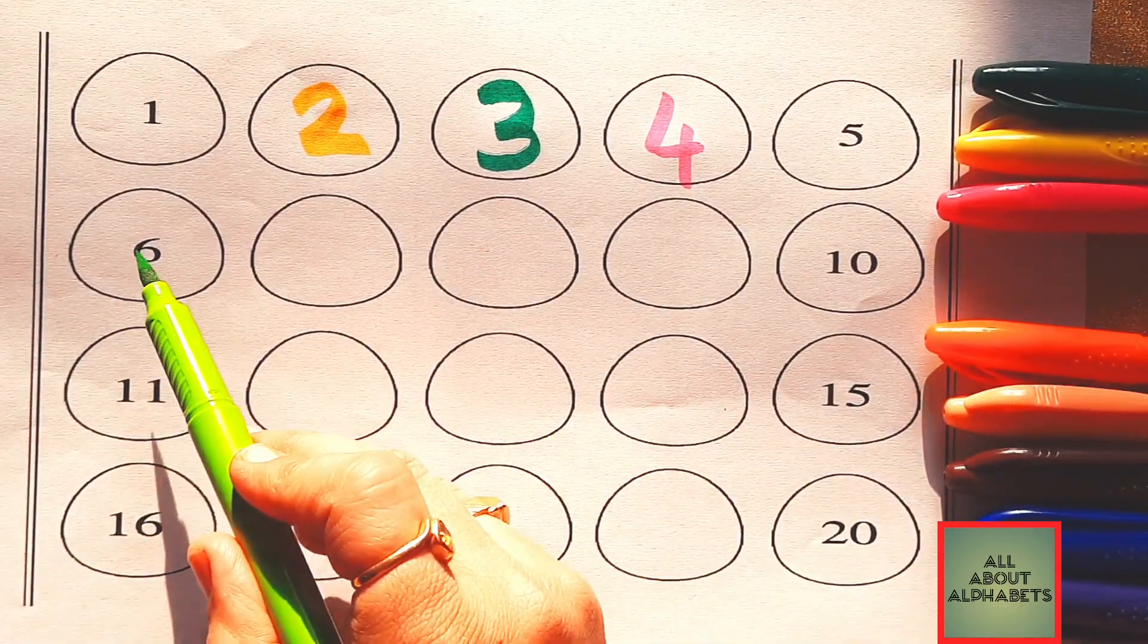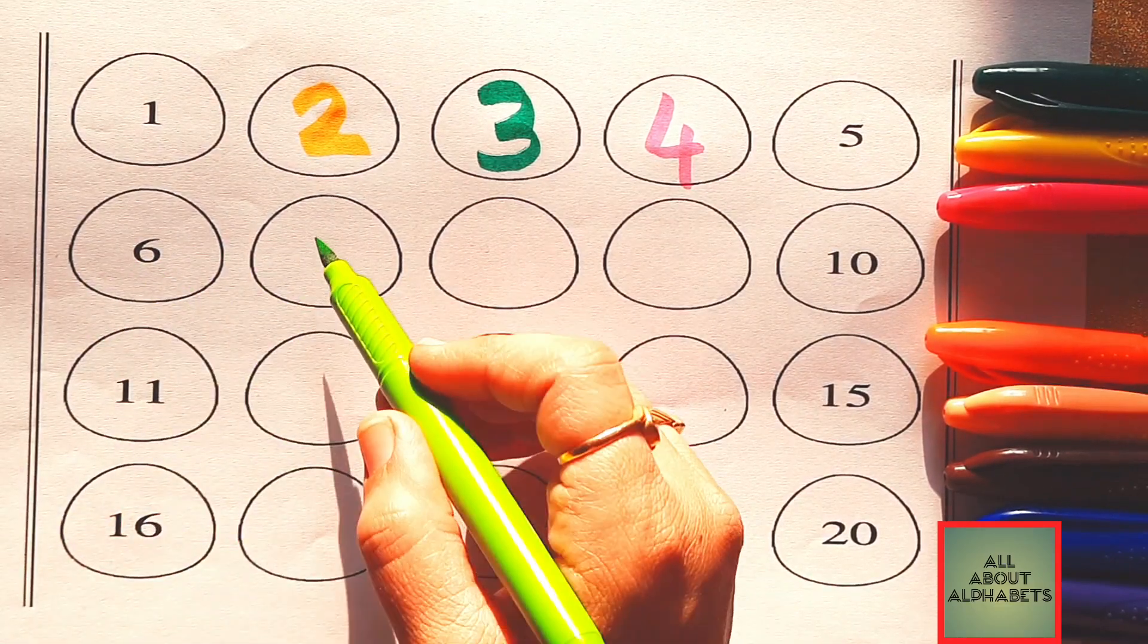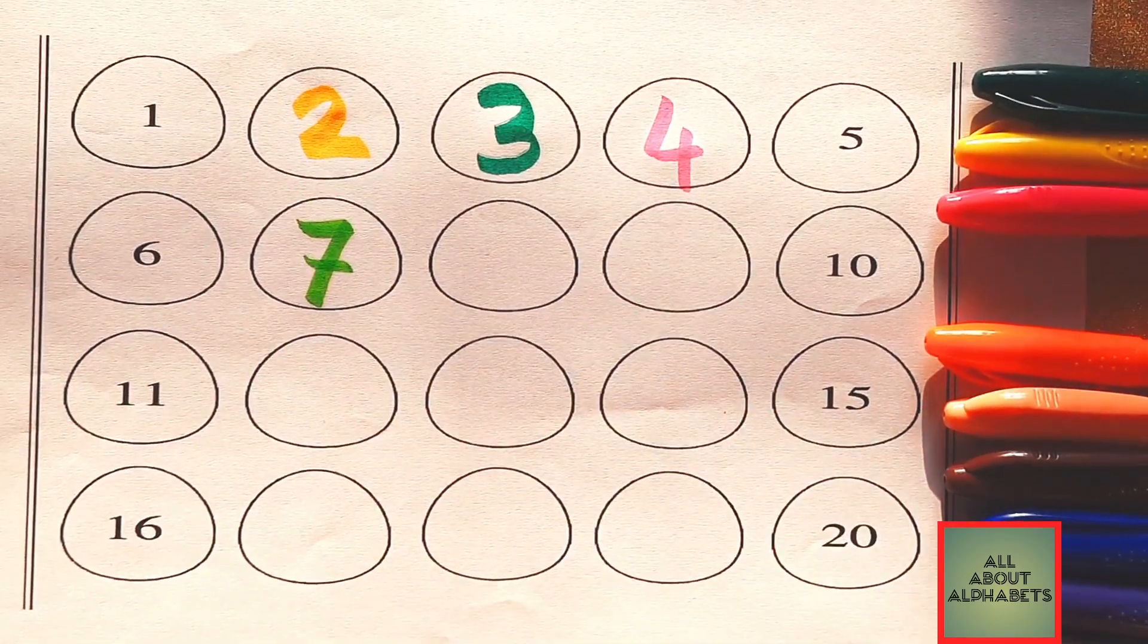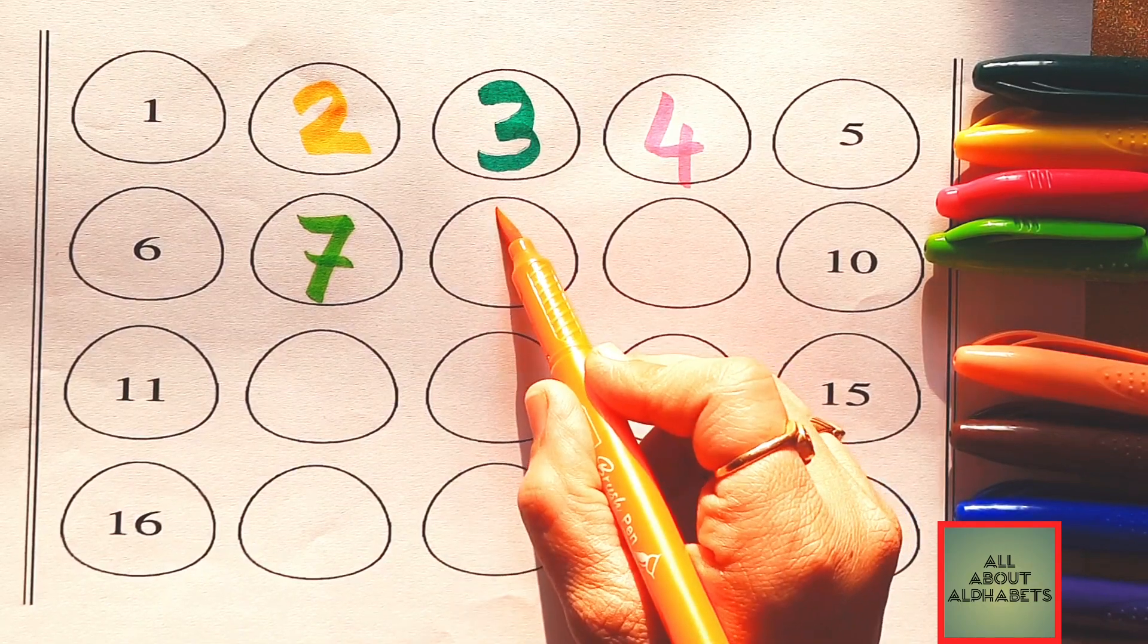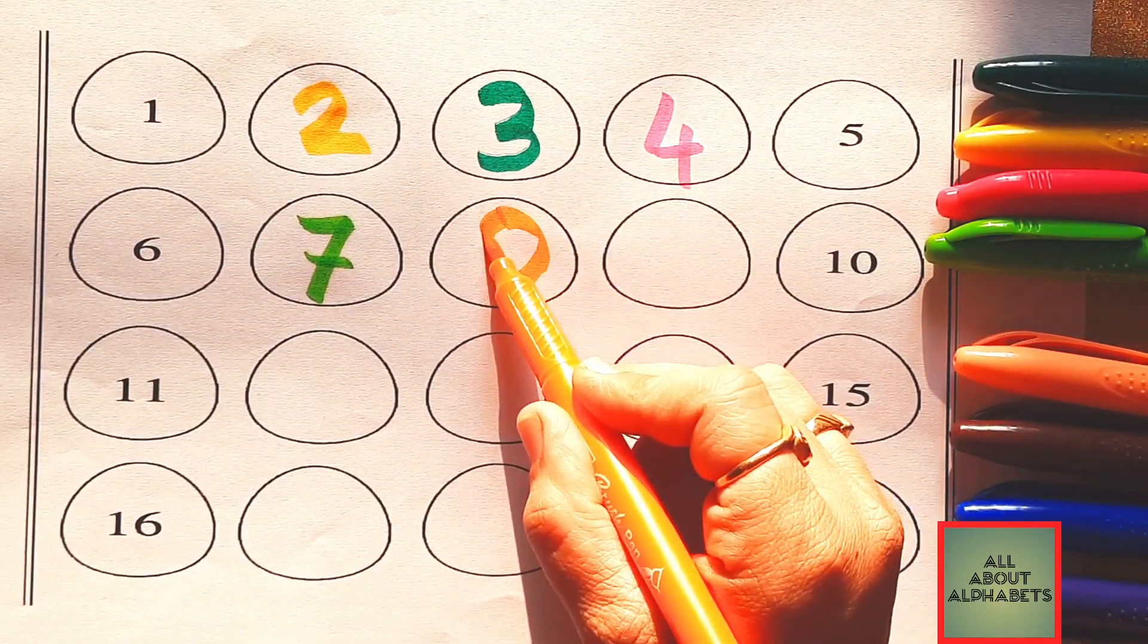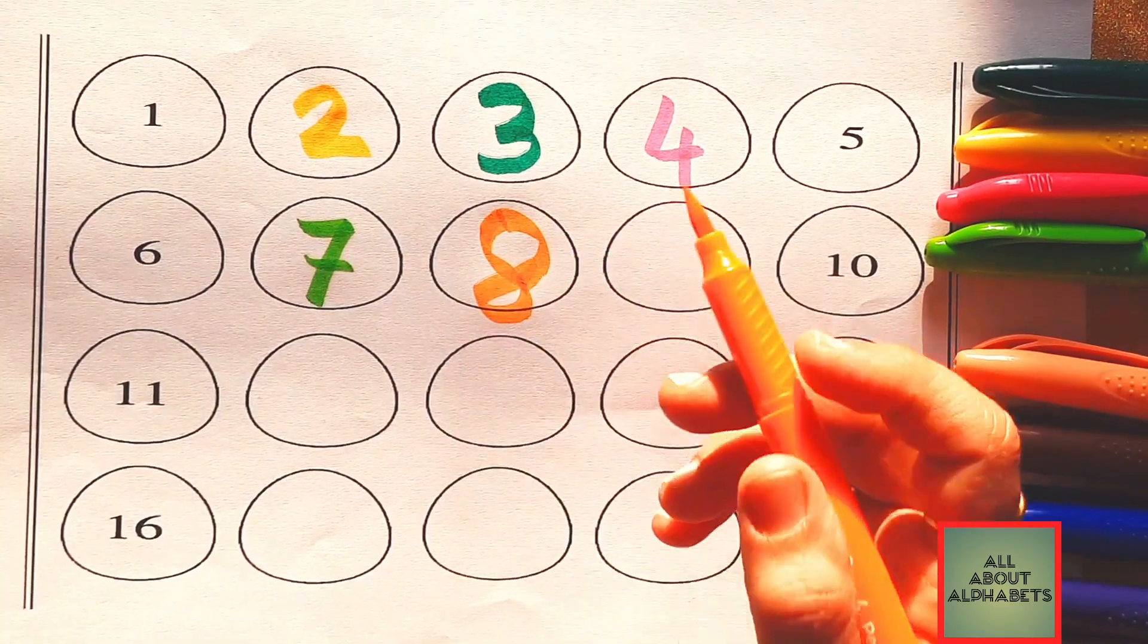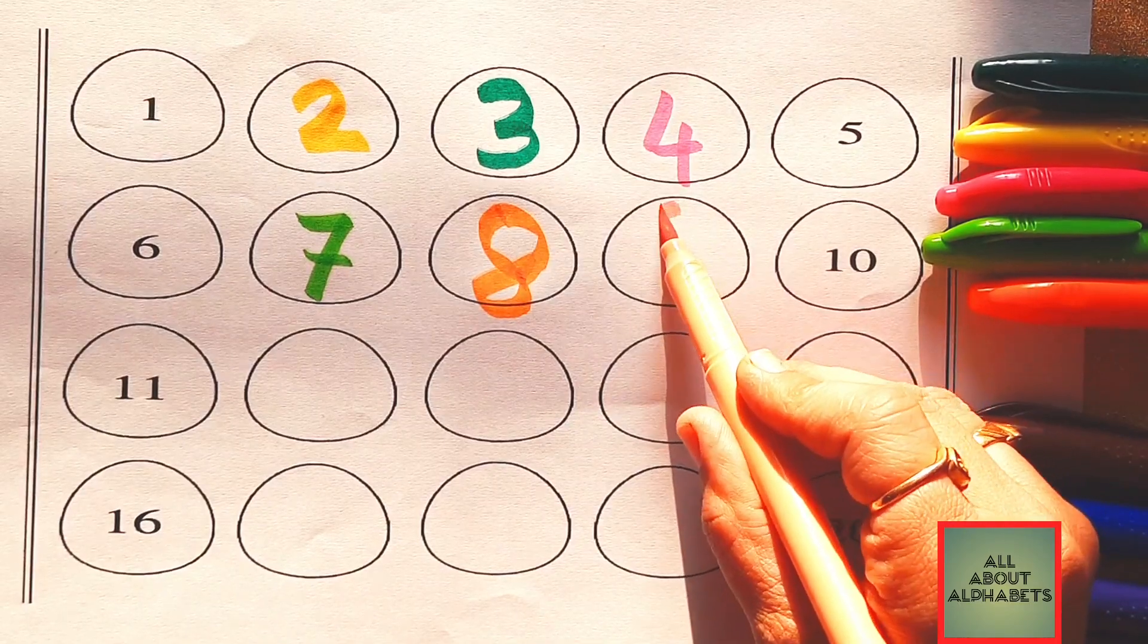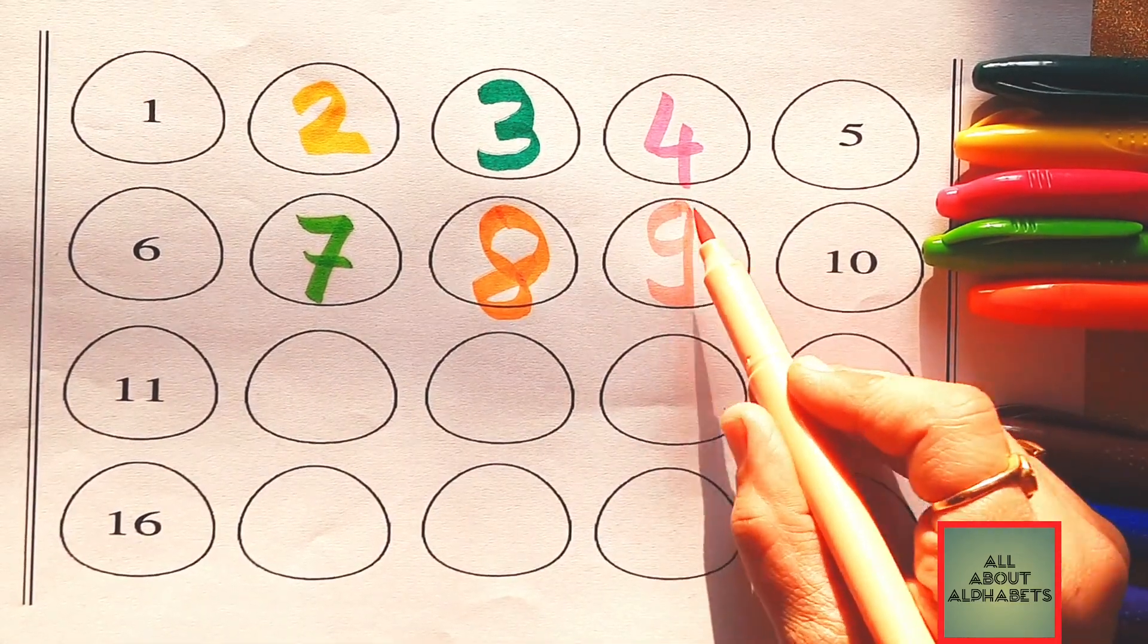Next 6. Number 6. Which number comes after 6? 7. Very good! Number 7. Which number comes after 7? Yes! 8. Number 8. Which number comes after 8? 9. Very good! Number 9.